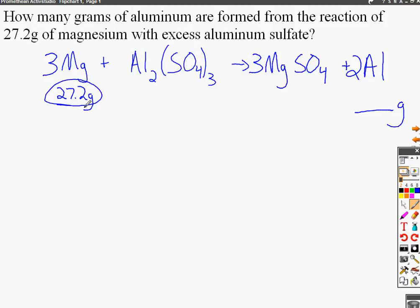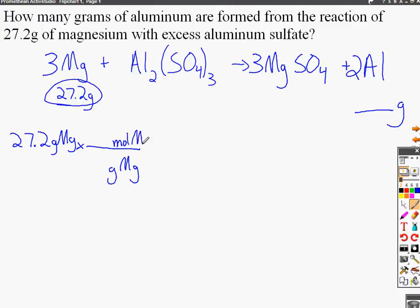Since we're given the amount of magnesium, we begin the conversion with 27.2 grams of magnesium. The next step is to convert from grams of magnesium to moles of magnesium. Grams go in the denominator so they cancel with grams in the numerator. From the periodic table, the molar mass of magnesium is 24.3050 grams per mole.